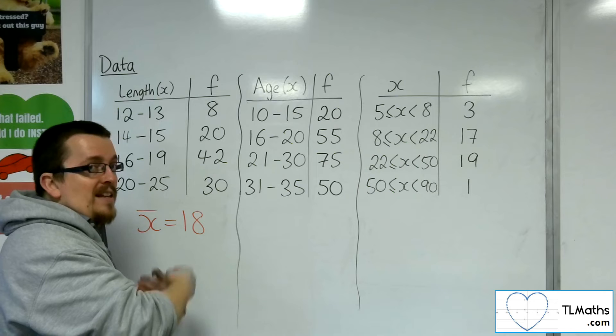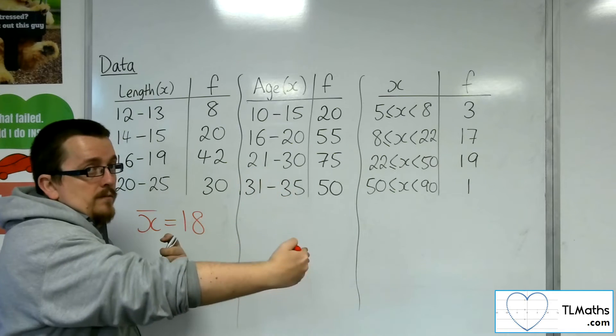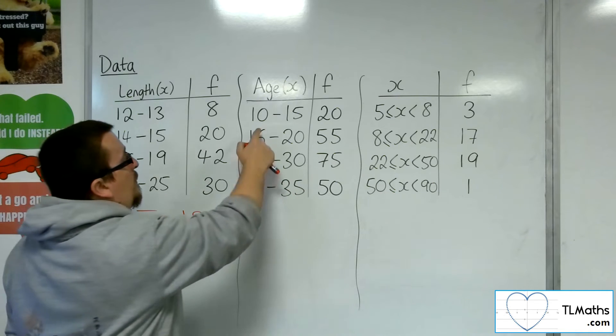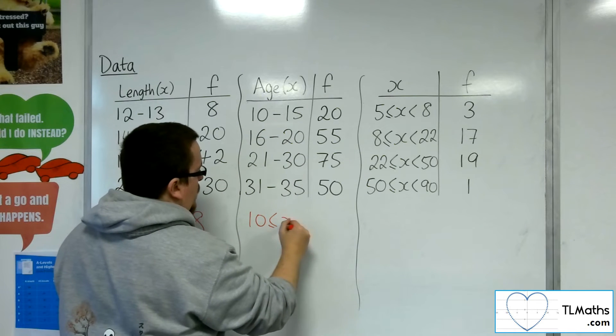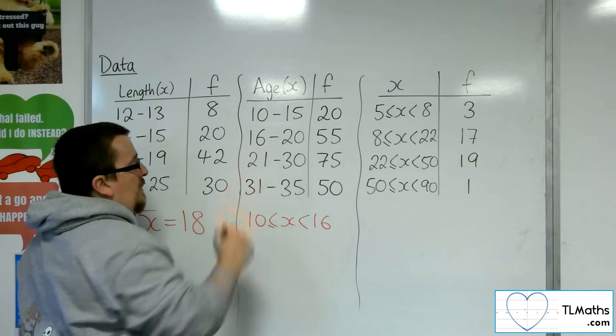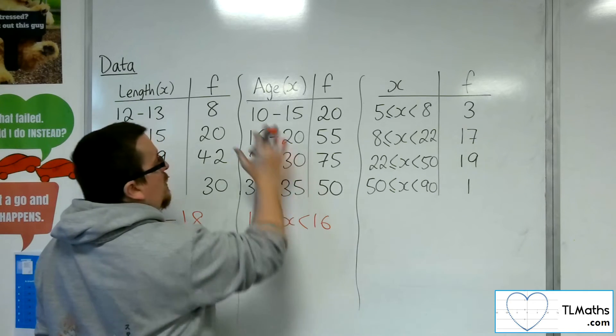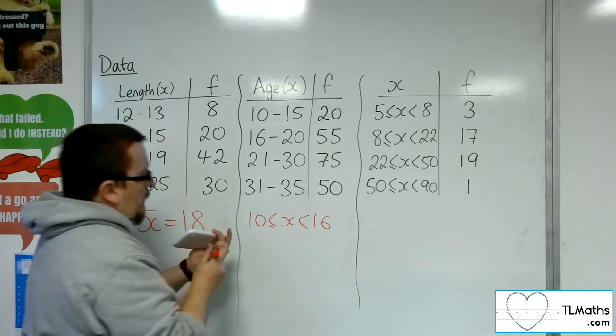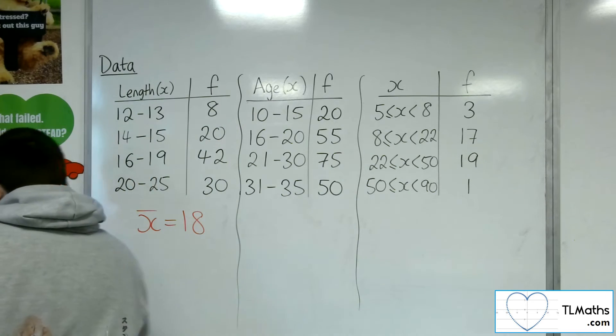So this grouping from 10 to 15 isn't going from 9.5, it's going from 10, and isn't going up to 15, it's going up to 16. This grouping is actually really saying 10 is less than or equal to x is less than 16. That's what that grouping is really saying. When you're finding the midpoint, you're going from 10 to 16, not 10 to 15, like we would have done here.